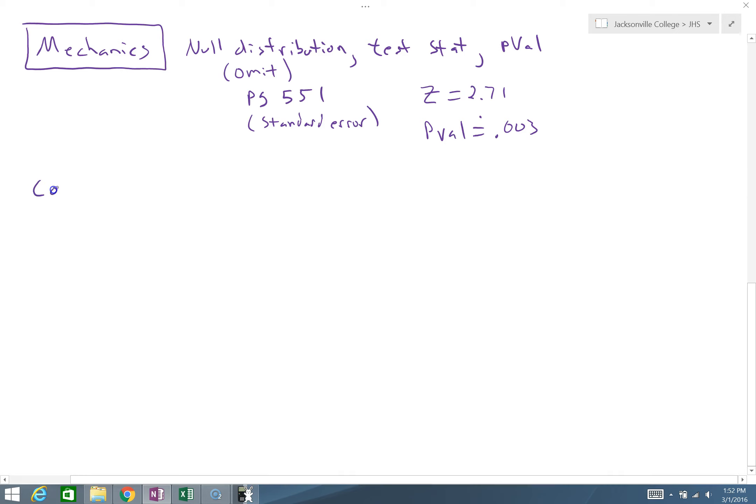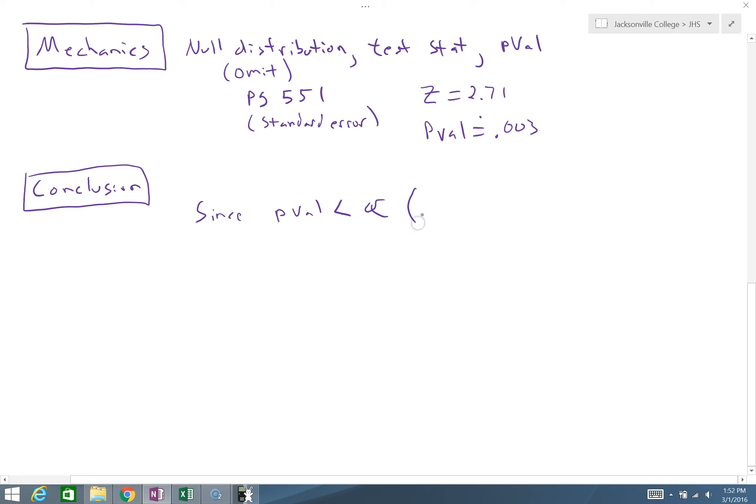Lastly, we're going to state our conclusion. In our conclusion, we compare, conclude, context. Since our p-value is less than alpha, our p-value is low. Reject the H naught. Our p-value is 0.003. Our alpha is 0.05. Since the p-value is less than alpha, we reject H-naught. There's my compare and my conclude context.